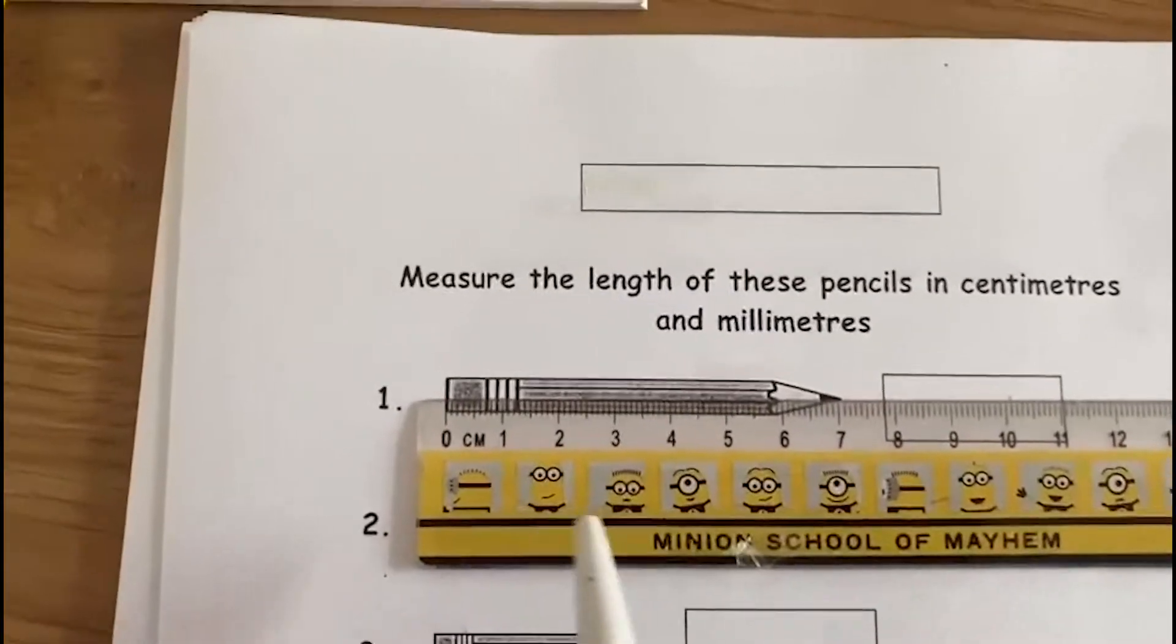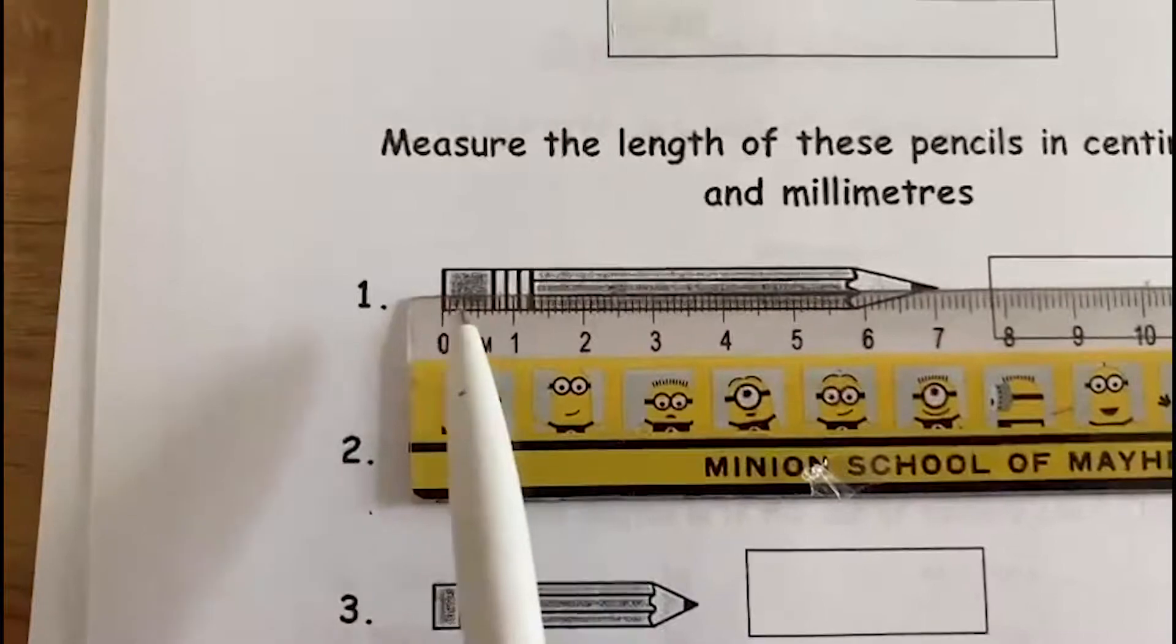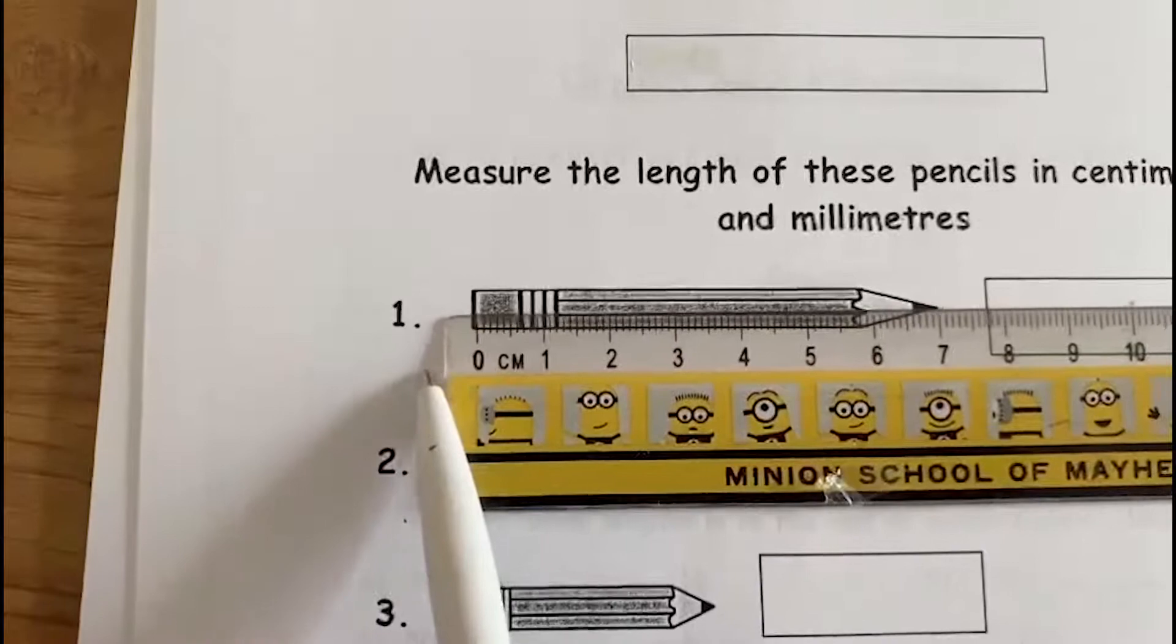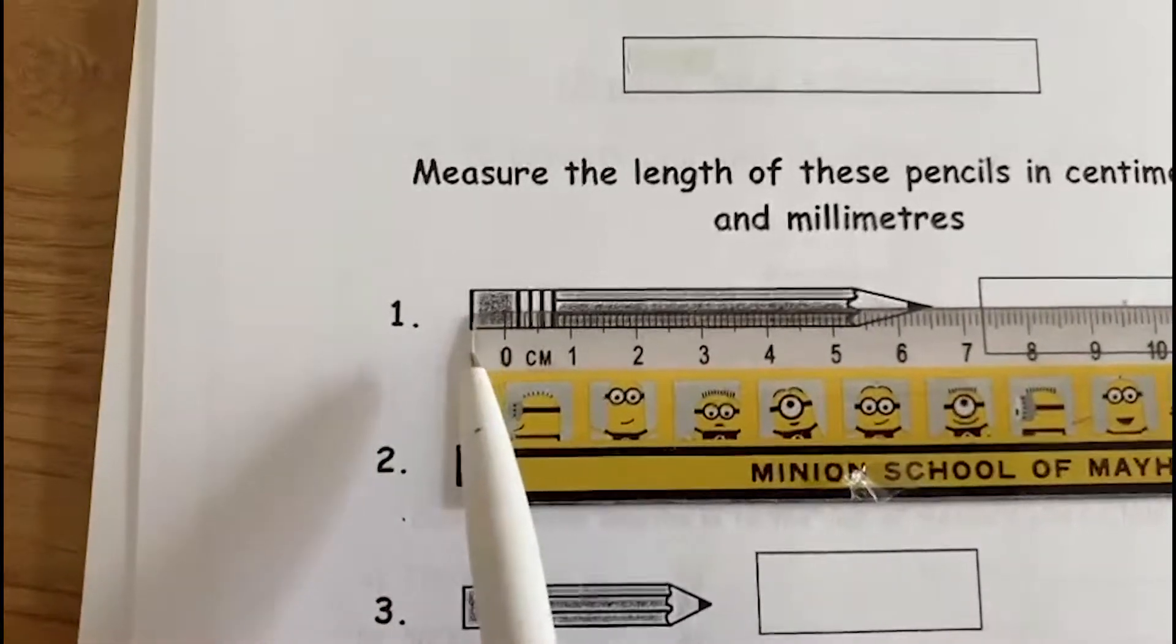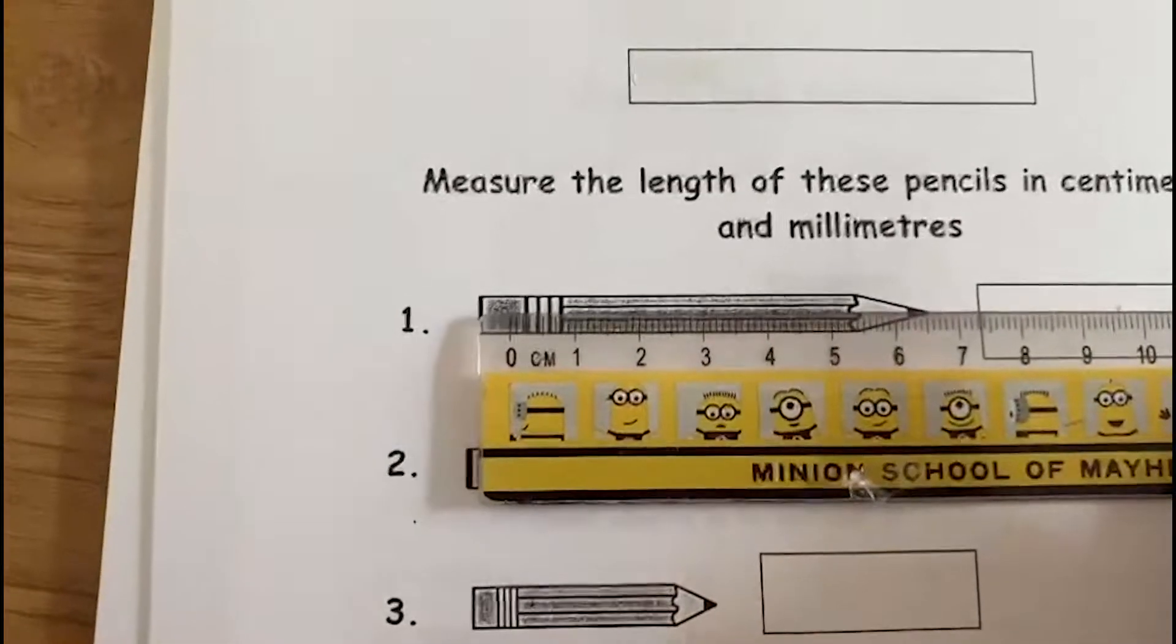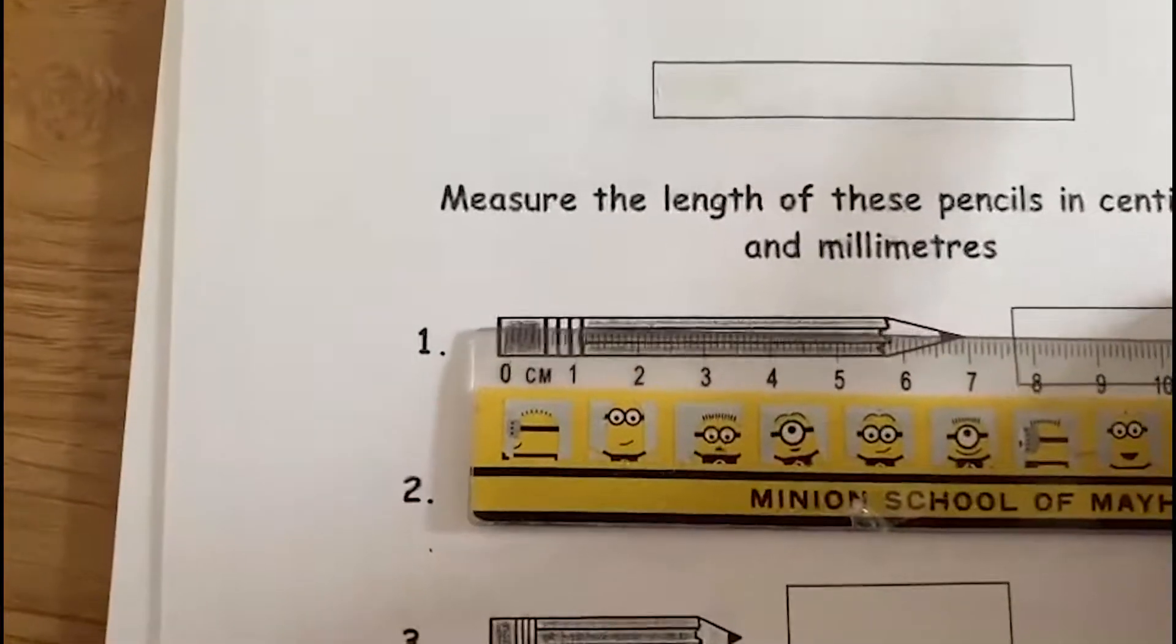Let's examine this ruler, one of my favorites. We always start, can you see, zero centimeters. So that's the starting point. You do not start from the very end. You have to start from where it says zero, because that's what we do when we start counting, right? We start from zero.